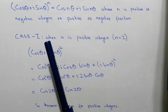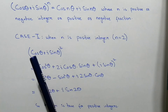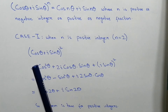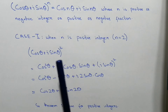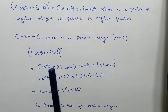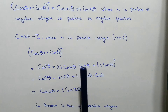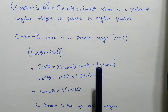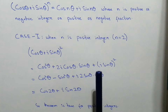Now here we have Case 1: when n is a positive integer. Let's suppose we are putting n equal to 2. So according to this, (cos θ + i sin θ)², we will apply the formula of (a + b)². That will be cos²θ + 2i cos θ sin θ + (i sin θ)². We know that i² is equal to −1.